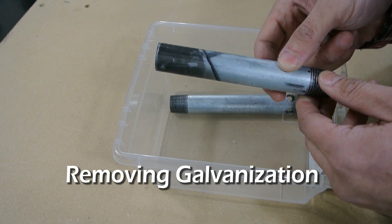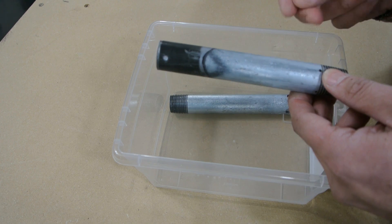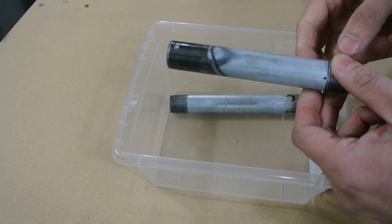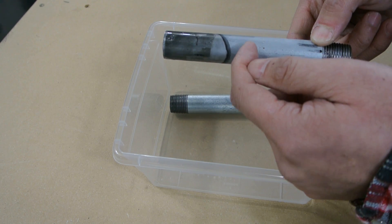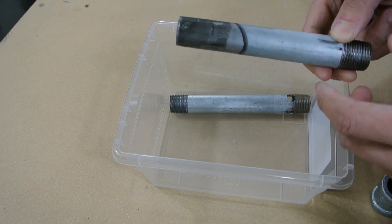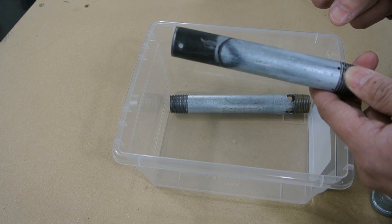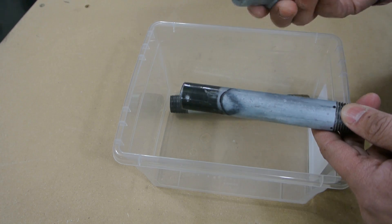I need to remove the galvanization on this pipe because it's going to be used in a torch. It's going to heat up, and I only really need to remove maybe up to here because this is where the nozzle will be. But instead, I'm going to remove all of it just because I have this coupler as well.